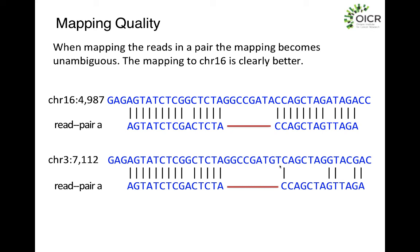Regarding how Phred scores are calculated: the sequencer has its own internal models, keeping track of the bases that come before and after, while looking at the combined fluorescence from each cluster. It performs its own mathematical modeling to assign quality scores.